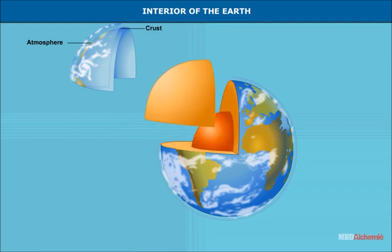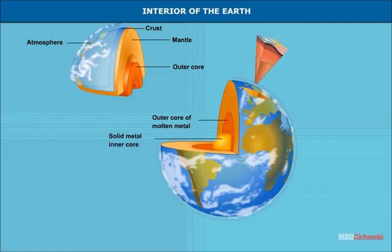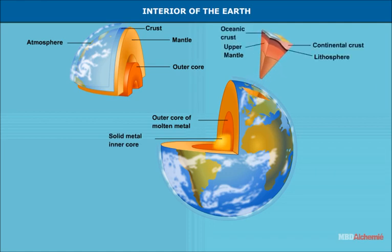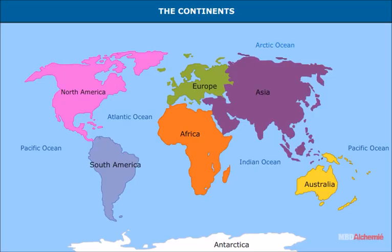The interior of the earth has three chief layers known as the crust, the mantle, and the core. Each of these three layers has two divisions. The crust, the upper mantle, and the core together make up the lithosphere. The lower mantle is in a semi-molten condition and extends towards the interior of the earth to a distance of about two thousand nine hundred kilometers. Beneath the mantle lies the core; the upper part of the core is in liquid state, but most of the interior is solid.